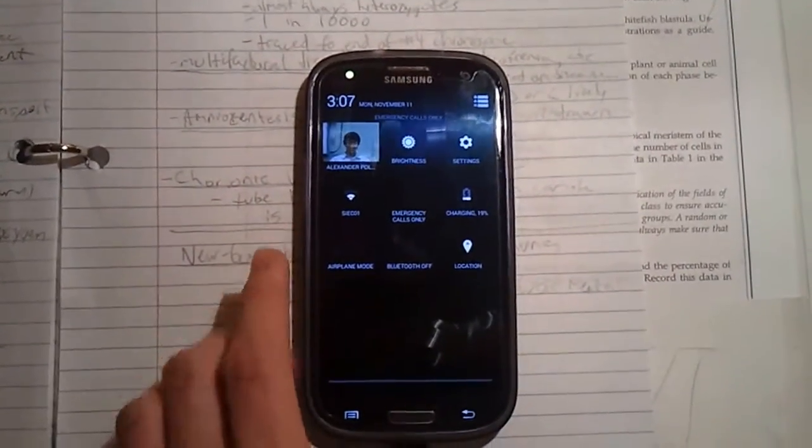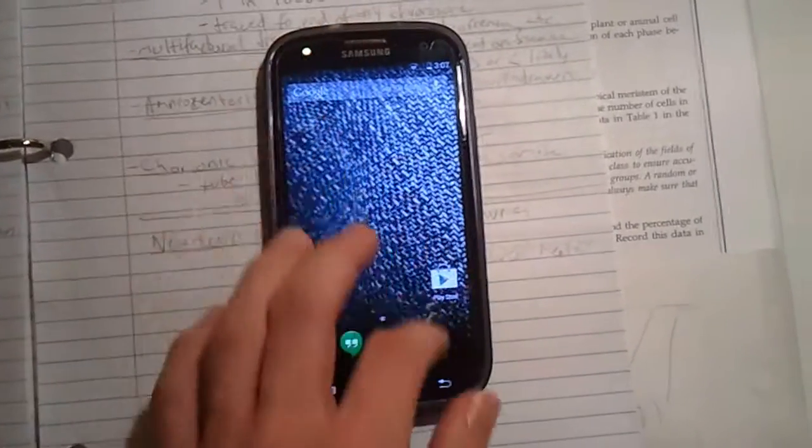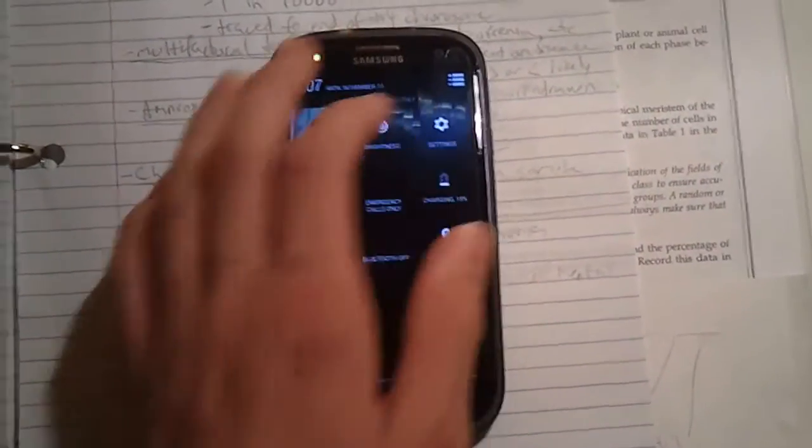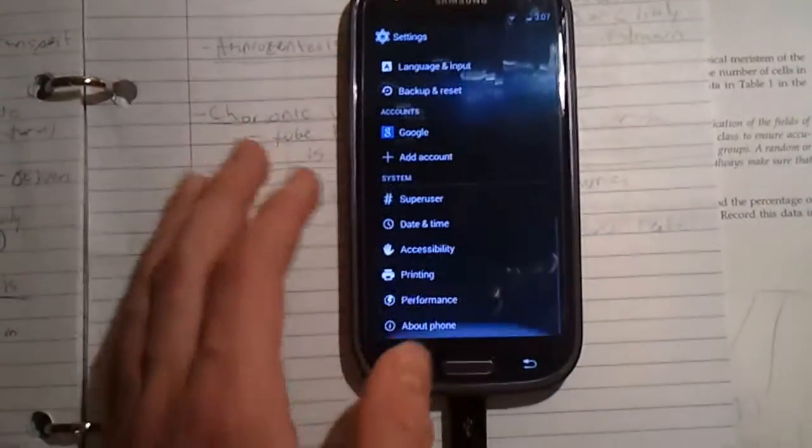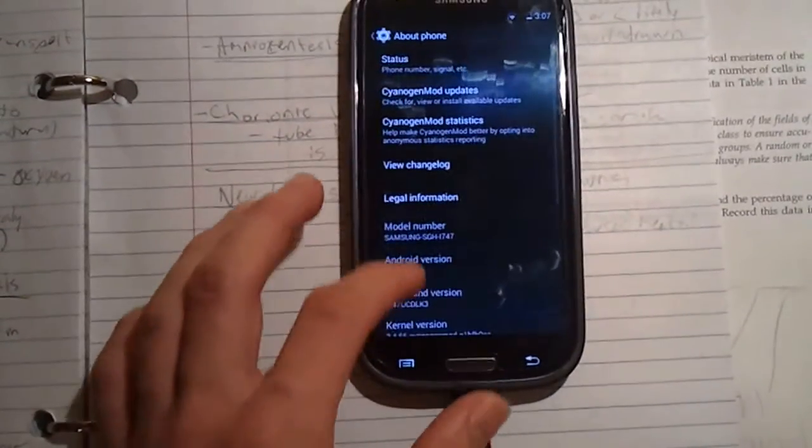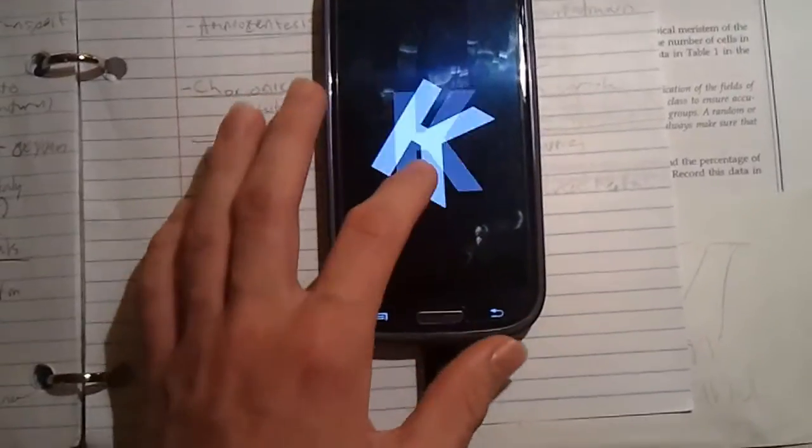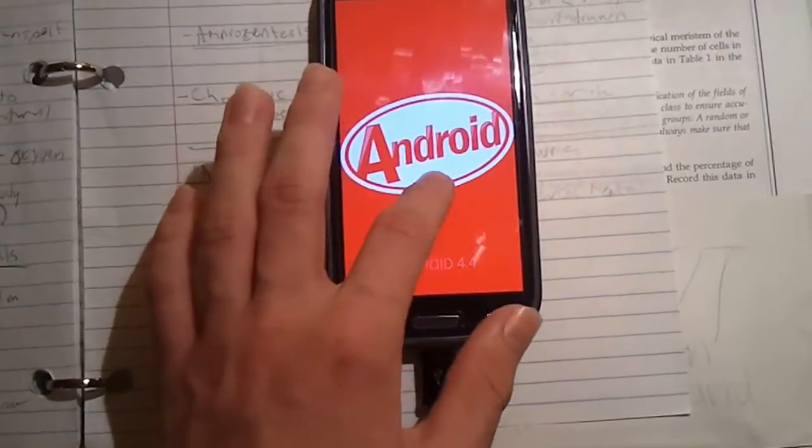They got rid of Holo, so everything's in white theme now, and everything in 4.3 is basically still there. So let's just hop into settings here so we can confirm this is 4.4. And here's the little thing.